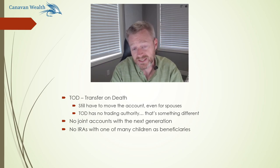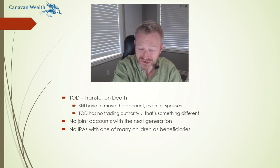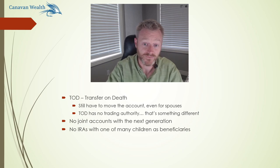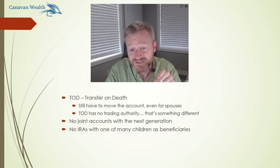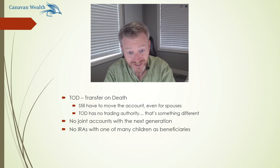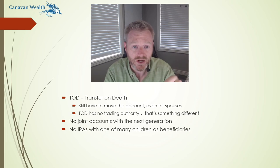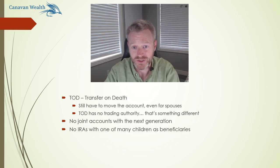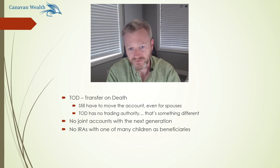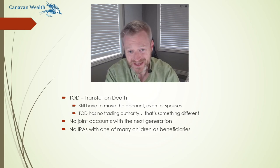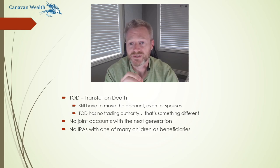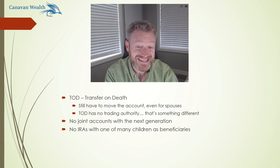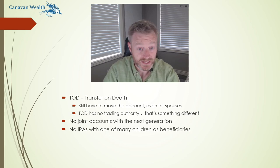What you would want to do instead is have your own account with a trading authority for one child and a TOD designation for all three children. Joint accounts with the next generation — specifically if you have multiple kids — is a common pitfall. And I've seen the exact same thing with IRAs, which is even worse: leaving your IRA to one child who is your executor, expecting them to distribute it to the rest of the family. That person is going to get stuck with the tax bill of your entire IRA and then also be stuck with gifting limits. This is the biggest no-no I've seen — leaving an IRA to a single beneficiary and expecting that beneficiary to distribute it to everyone else.